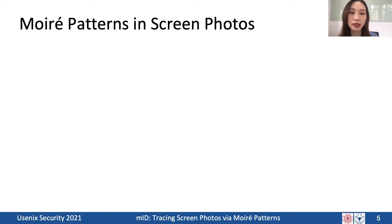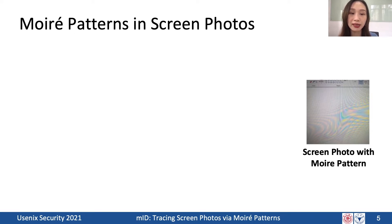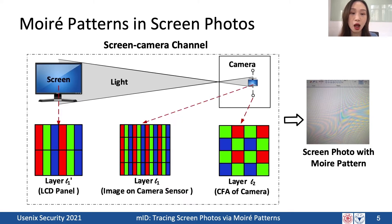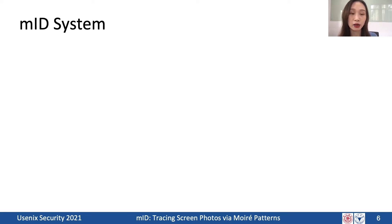To address this, we take a close look at screen photos and find that they contain moiré patterns. Moiré patterns are optical phenomena generated during the process of photographing screens — generated by the superposition of two periodic layers, such as the image on the camera sensor and the color filter array of the camera. Since moiré patterns are natural optical phenomena in screen photos, we ask: can we use them to trace the source of the file leakage, or in other words, the identity of the adversary? This is the basic idea of MID.